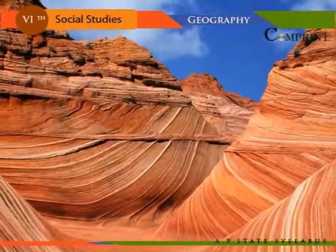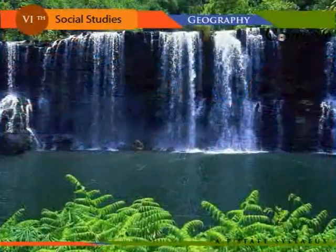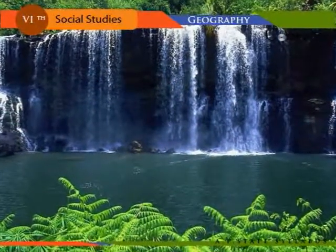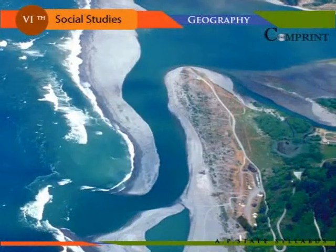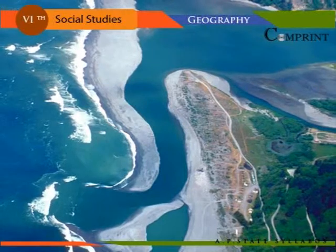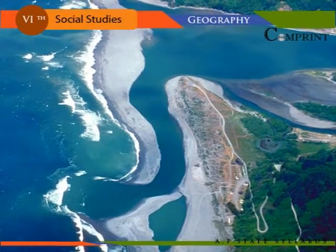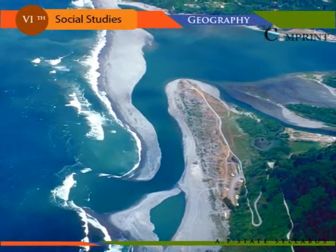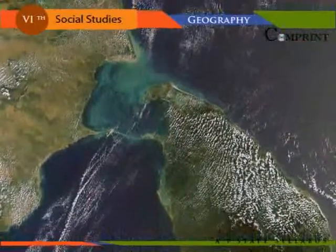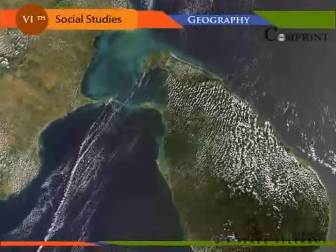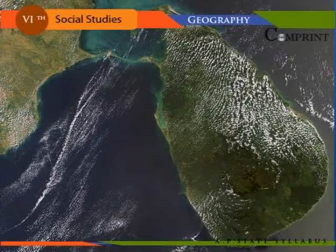A steep-sided valley formed by the deep narrow cutting of a river is known as a canyon. A waterfall is defined as a vertical fall of water of enormous volume from a great height in the long profile of the river. At the mouth of the river, the river divides itself into many distributaries due to the deposition of sediments over a large area. This fertile deposition results in a triangular-shaped formation called a delta — for example, the Krishna Delta. A narrow passage of water connecting two large water bodies by dividing two large land masses is known as a strait — for example, Palk Strait.